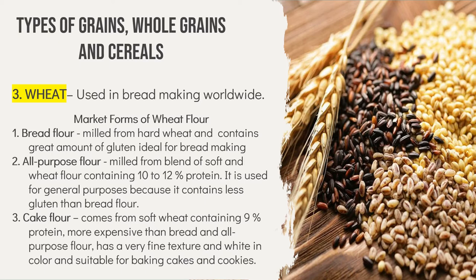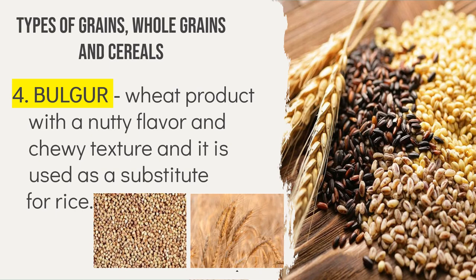Wheat is one of the world's most commonly consumed cereal grains, coming from a type of grass grown in countless varieties worldwide. Bread wheat or common wheat is the primary species. Next is bulgur — a wheat product with a nutty flavor and chewy texture, used as a substitute for rice. Bulgur is a cereal food made from the cracked, parboiled grains of several different wheat species, most often durum wheat, and it originates in Middle Eastern cuisine.